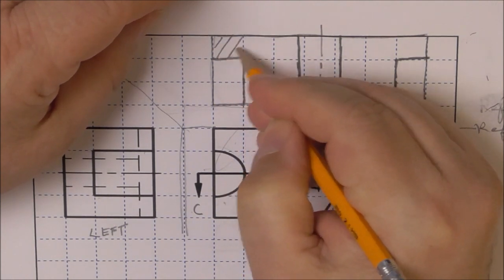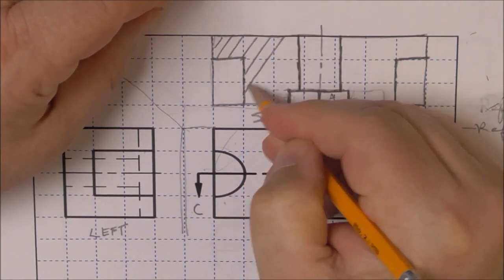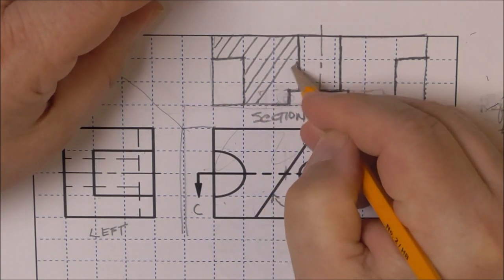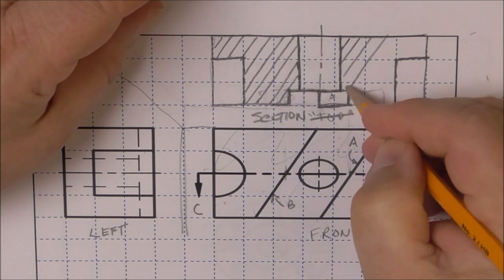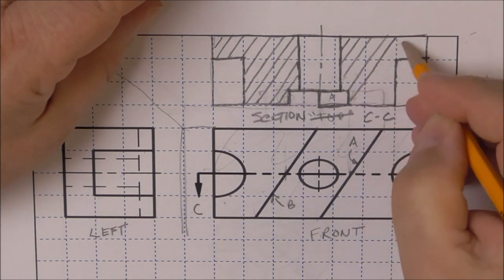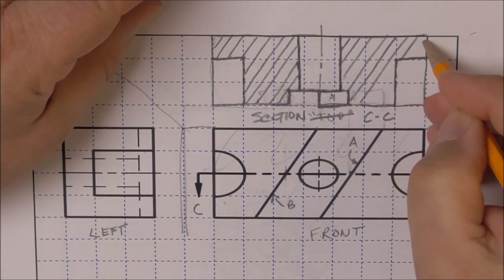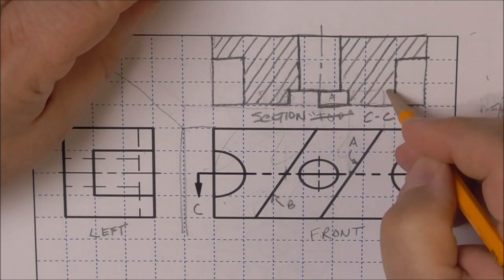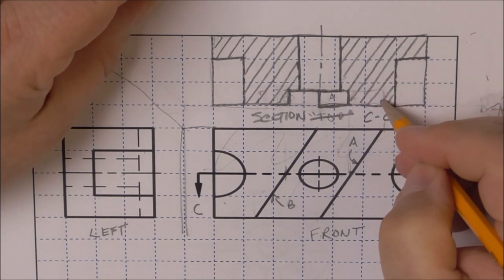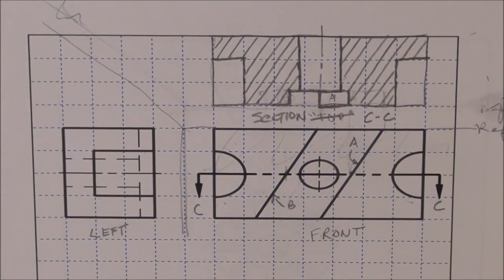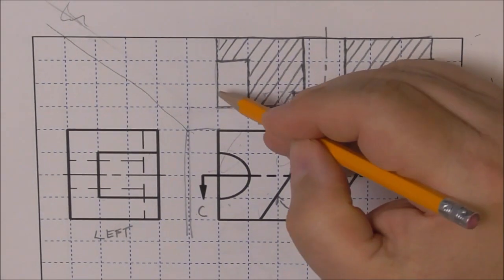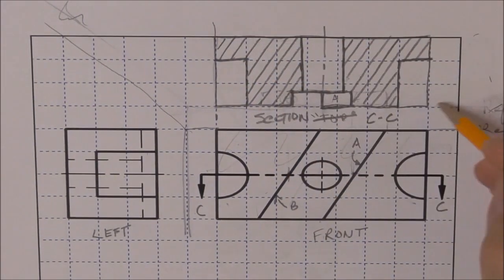Then we add the section line area, the material we're imagining we're cutting through. Section lines are parallel about three to five millimeters apart, starting and stopping at an object line. And that would be the solution. I guess there would be a center line right here but we wouldn't really be able to see it.